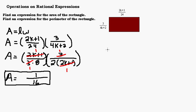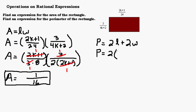Now let's look at the perimeter. In order to find the perimeter, we need to add up all the sides, or we could take 2 times the length plus 2 times the width. The length is 2k plus 1 over 24, and we need 2 of those because of the top and the bottom. Then same thing with the width — we have 3 over 4k plus 2, and we need to multiply that by 2 because we have the left side and the right side.